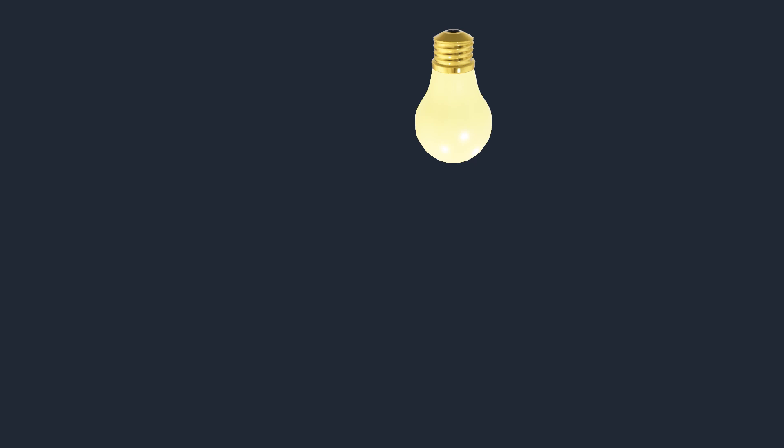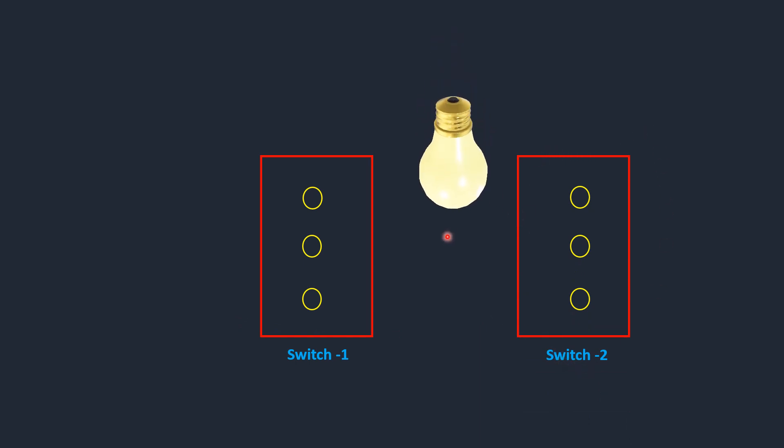I'll take a switch here—this is Switch 1, then this is Switch 2. Now I require a light. This is my light. So I have two switches and one light.